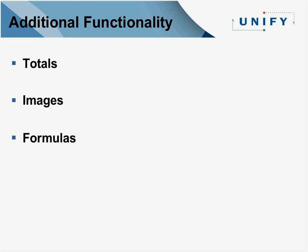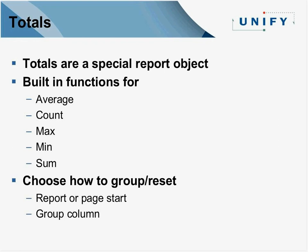What else can you do in Report Builder? Built-in functionality includes working with totals, images, and formulas. Totals are special aggregate function objects in the report that can do averages, counts of rows, minimum and maximum values, or summations. You can choose whether totals reset based on a group column — placing values in a header or footer section — or at the whole report level, or for each page. So you can have totals based on different conditions depending on how your users want to see the information.